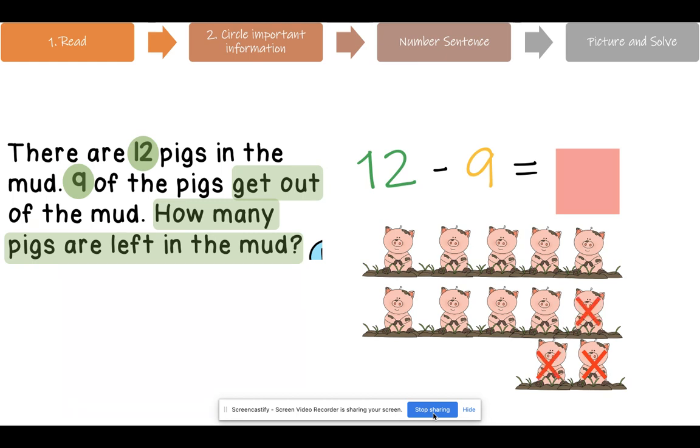1, 2, 3, 4, 5, 6, 7, 8, 9. How many pigs are left in the mud? Excellent. 12 minus 9 equals 3.